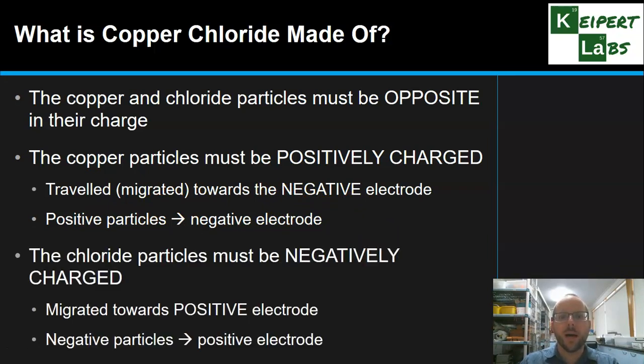That means, therefore, that the chloride particles must be the opposite. They must be negatively charged. How do we know this? We saw bubbles of chlorine gas appearing at the positive electrode. That is, the chloride particles have migrated or travelled towards that positive side. That means they must be negative themselves because opposite charges attract. That's what we're seeing here and here.